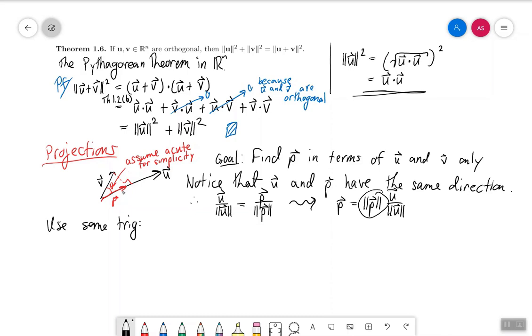Looking at the triangle over here, we see that v, the length of v is going to be the hypotenuse, and the length of p is going to be the leg, and theta is the angle between them. So we can write the length of p as the length of v times the cosine of that angle between them.